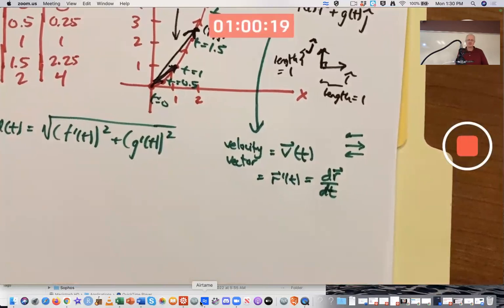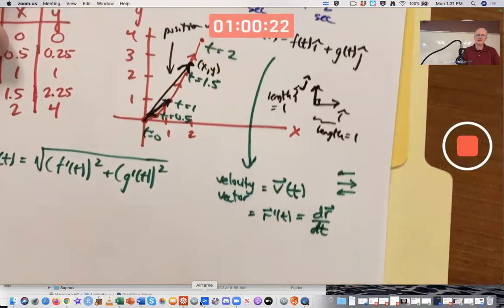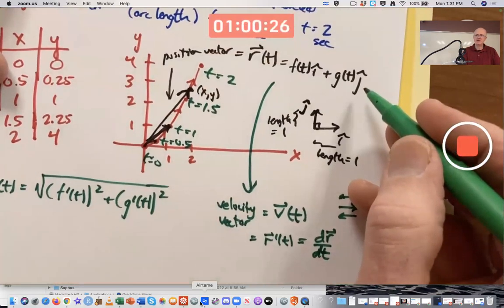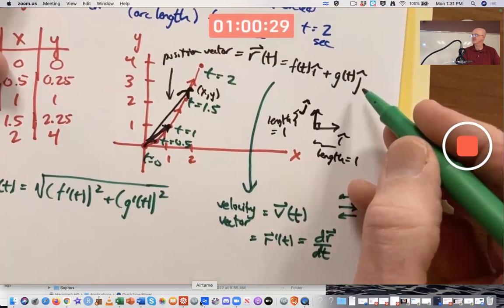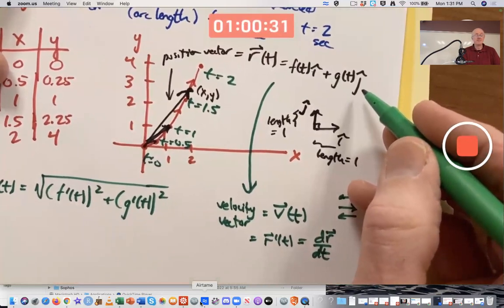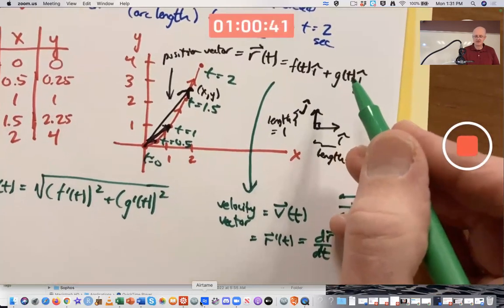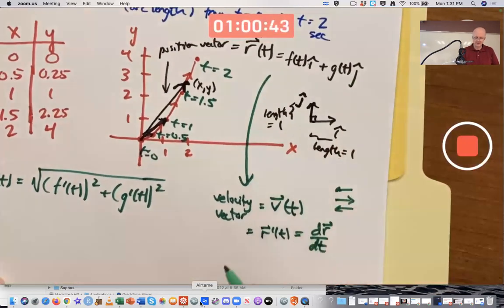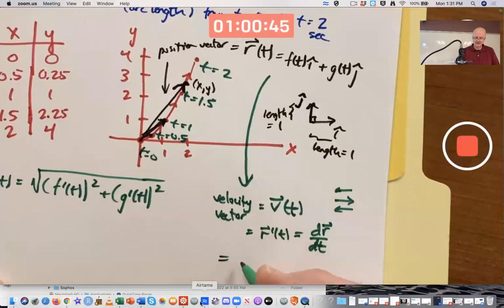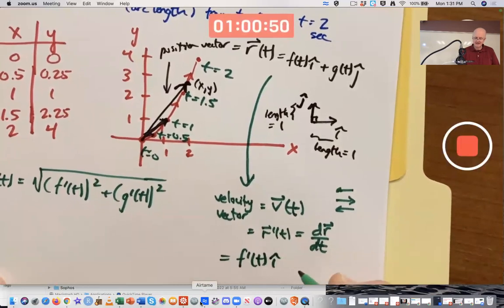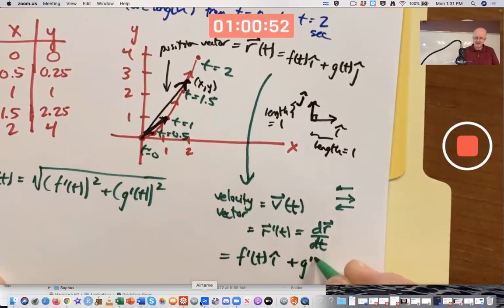And how do you find it? Do I need to differentiate this? And if I do, what do I do about the i-hat and the j-hat? The i-hat and the j-hat are constant vectors. They just get carried along for the ride. And the plus sign, differentiation is still linear. It gets carried along for the ride. The answer for the velocity vector is its first component is F prime of T next to the i-hat, and its second component is G prime of T next to the j-hat.